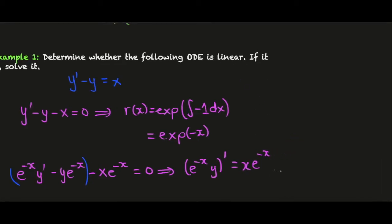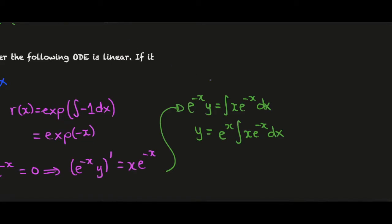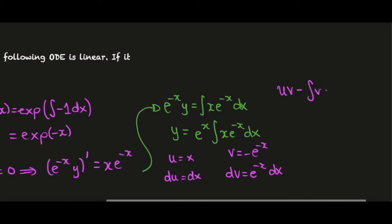Now this is convenient because we notice that this term here is simply e to the minus x times y differentiated, and then we'll just take this x e to the minus x over. So now with this we can integrate both sides and we'll have e to the minus x y equals the integral of x e to the minus x dx, and y is e to the x times the integral of x e to the minus x dx. To calculate this we need to use integration by parts. We'll set u equal to x, du is then dx, dv is e to the minus x dx and v is minus e to the minus x. Then integration by parts gives us uv minus the integral v du. So we'll have uv, that's minus x e to the minus x minus the integral of v, which will give us a plus e to the minus x du.